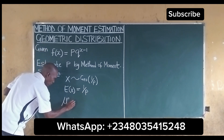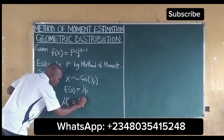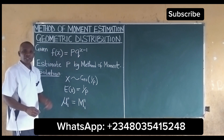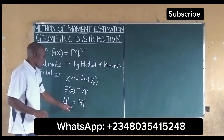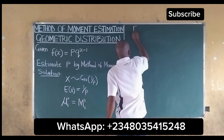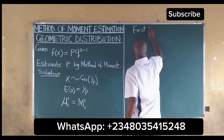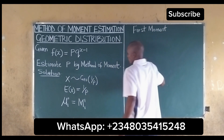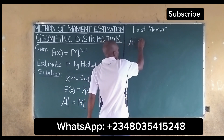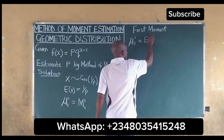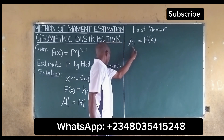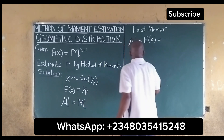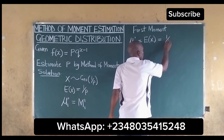The population mean must be equal to the sample mean — when you have this, you have the solution of the method of moments. For the first moment, since we are estimating just one parameter, we have that mu is equal to the expected value of x, that means the population mean, and the expected value of x is equal to 1 over p.